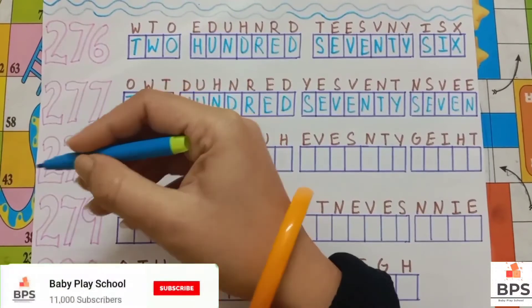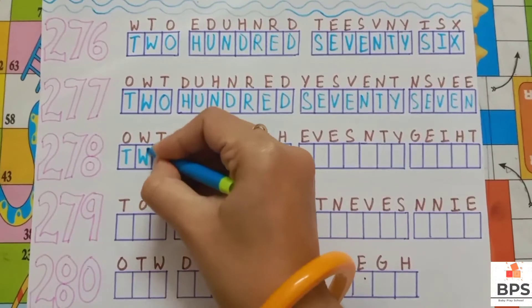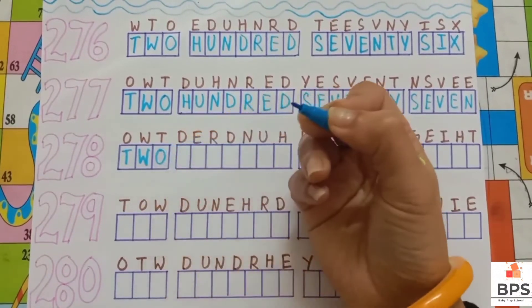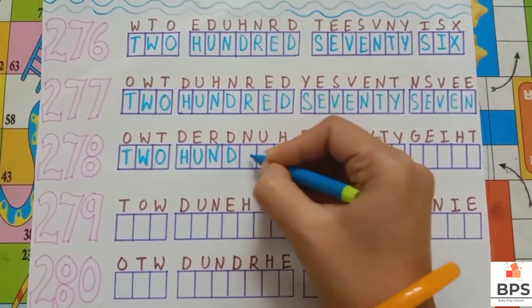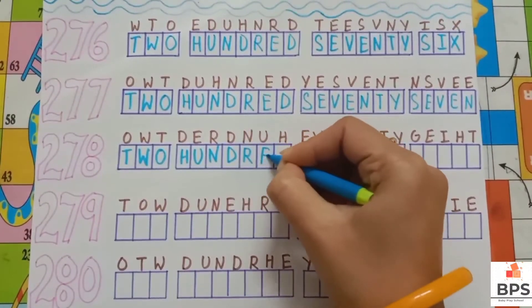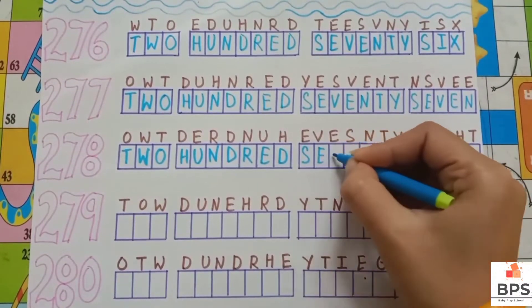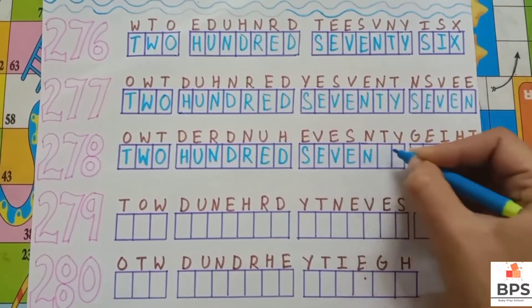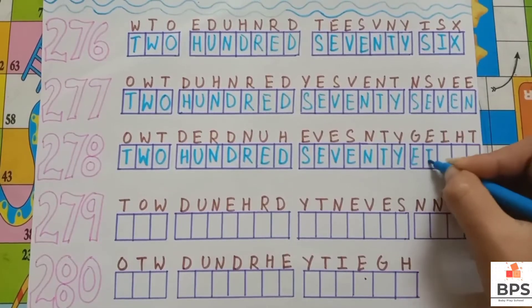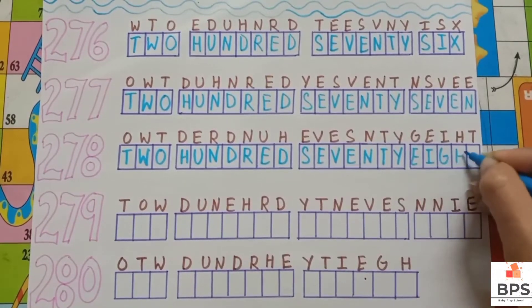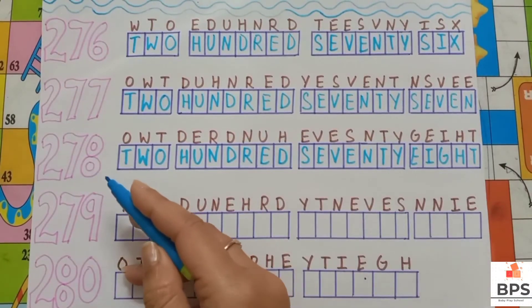278: T, W, O, 2, H, U, N, D, R, E, D, 100, S, E, V, E, N, T, Y, 70, E, I, G, H, T, 8. 278.